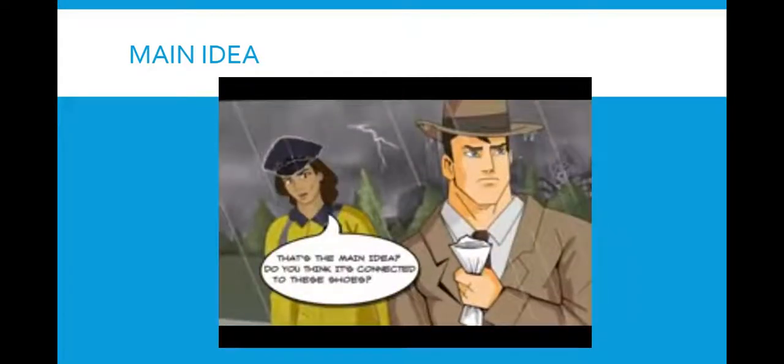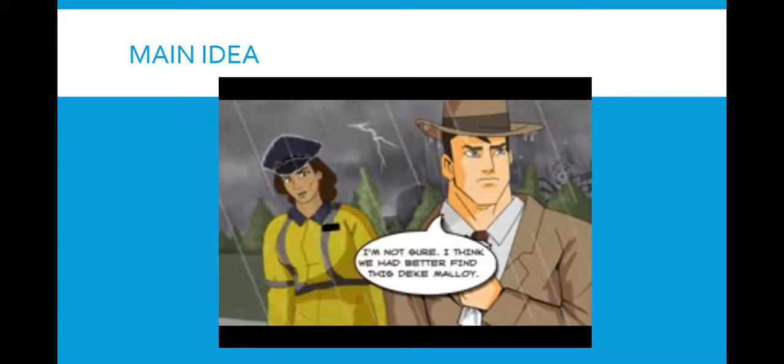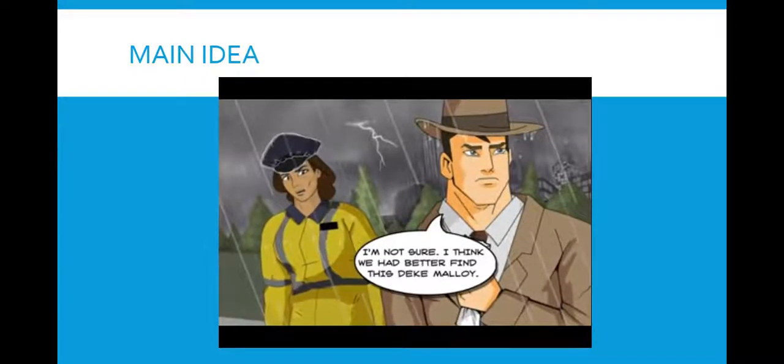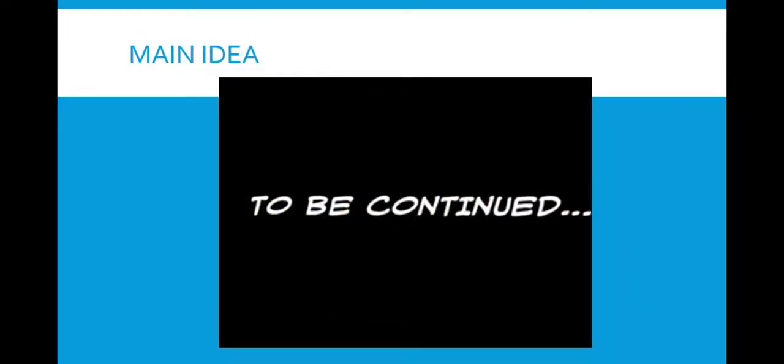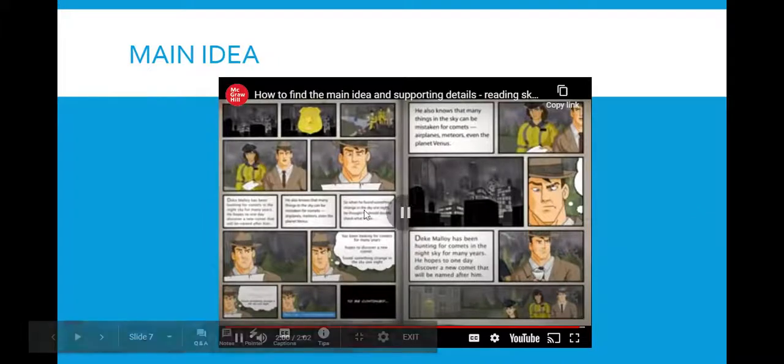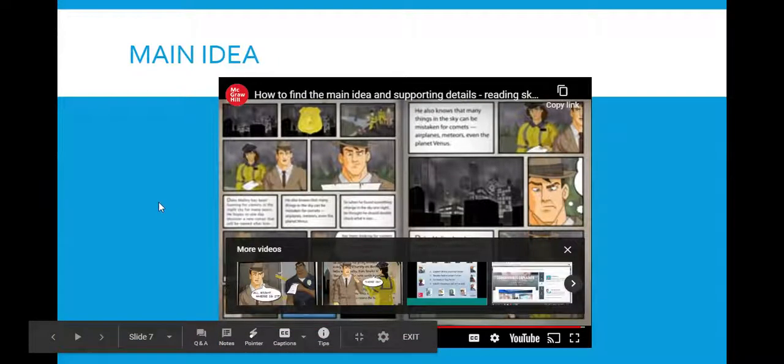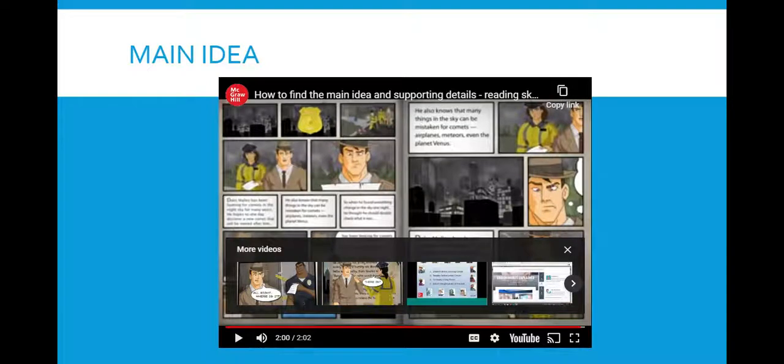Deke Malloy found something strange while searching the sky one night. That's the main idea? Do you think it's connected to these shoes? I'm not sure. I think we had better find this Deke Malloy. So I want you to think to yourself, what did this detective do to find the main idea? So one way that he determined the main idea was to think about what the most important part of the story was. So that he was looking in the night sky was a key detail, but it wasn't what was most important.